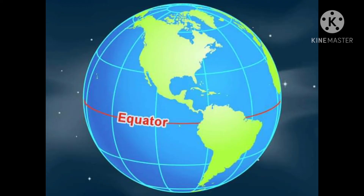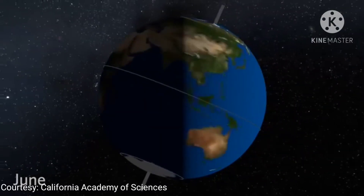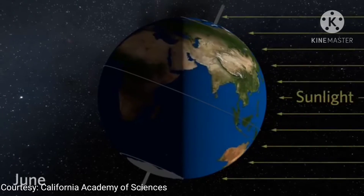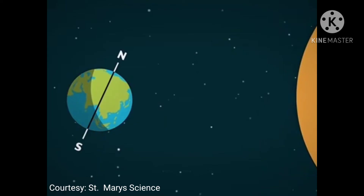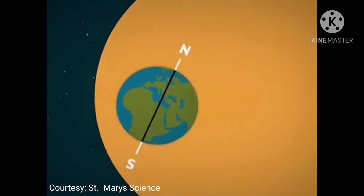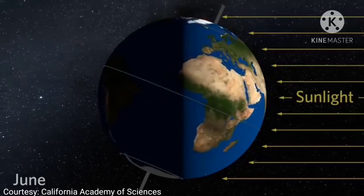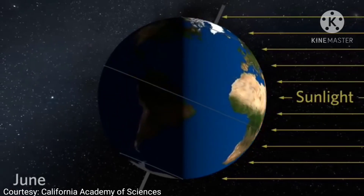The equator also doesn't have seasons that vary the weather. This is because the sun's height in the sky isn't much different during the year. Whether the Earth is tilted towards the sun or away from the sun, the angle of the sun's rays is pretty consistent.